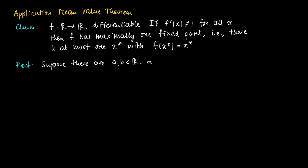a and b are unequal. So say without loss of generality we may assume that a is smaller than b, such that f(a) equals a and f(b) equals b. So basically this says suppose we have two fixed points of the function f.